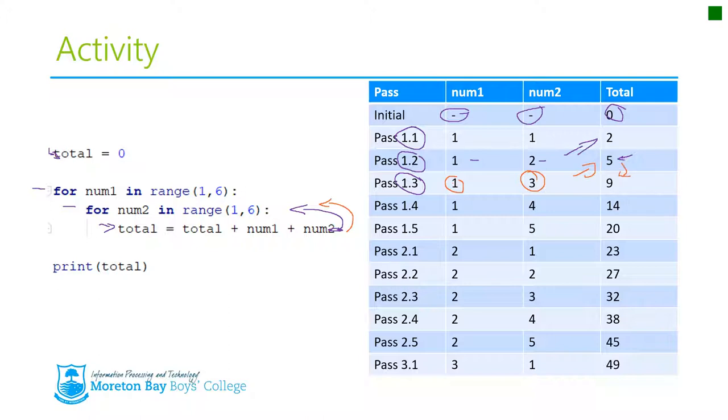So num2, well num1 is still 1, num2 is now 4. So 1 and 4 plus 9 equals 14. Okay, so finally, and we just googled around the colour, coming back to here, back up here at green, and we say, num1 is still 1, num2 is 5. 1 and 5 and 14 equals 20. Nice arrow there.